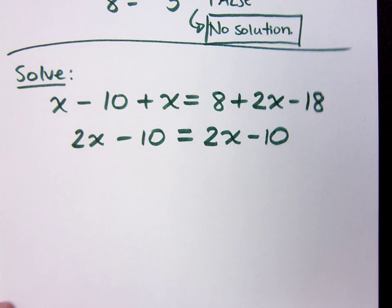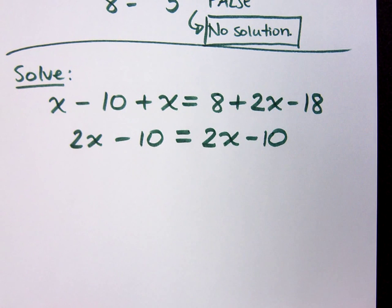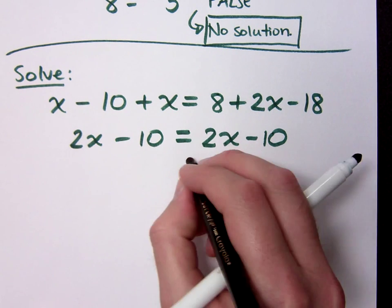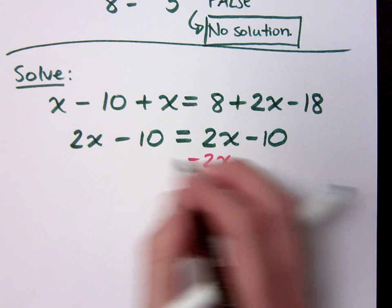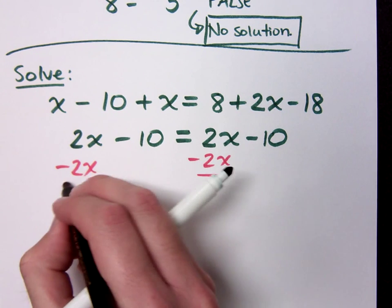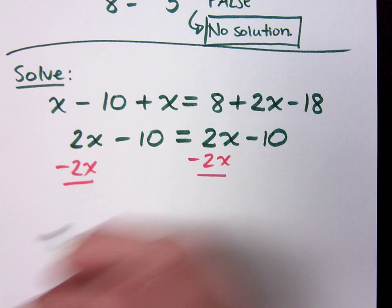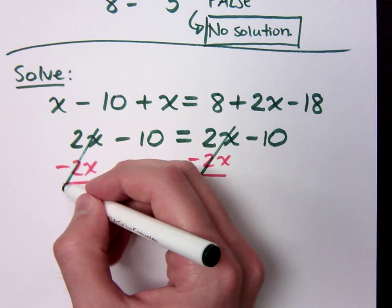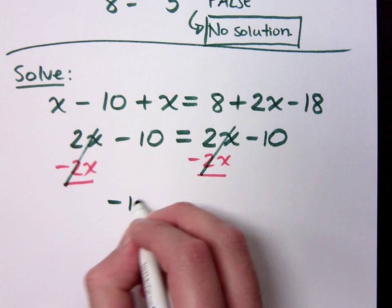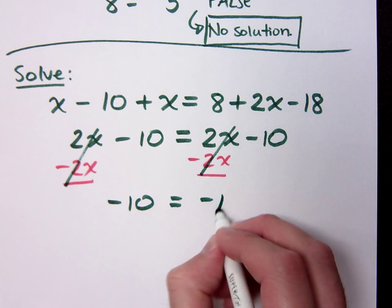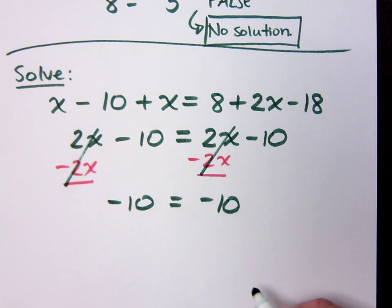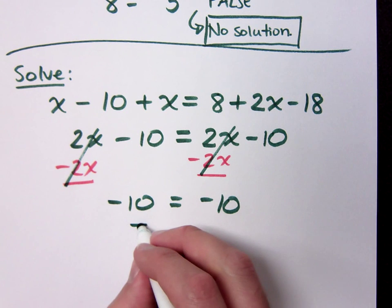That doesn't seem weird to you guys. Let's do what we did in the last problem. Let's go ahead and get the x's to one side. So if I subtract 2x and subtract 2x, what happens? That becomes 0. That becomes 0. And I have negative 10 equals negative 10. This is a true statement.